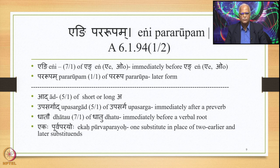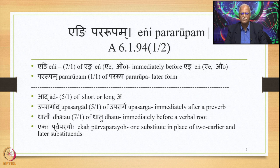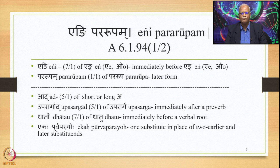Engi Pararupam is 6.1.94. This Sutra has two padas: Engi and Pararupam. Engi is 7/1 of Eng — a Pratyahara covering the sounds in the 3rd Pratyahara Sutra, namely E and O. So Engi means immediately before Eng, that is, immediately before E and O. Pararupam is 1/1 of Pararupa, meaning 'later form,' and this is the substitute.